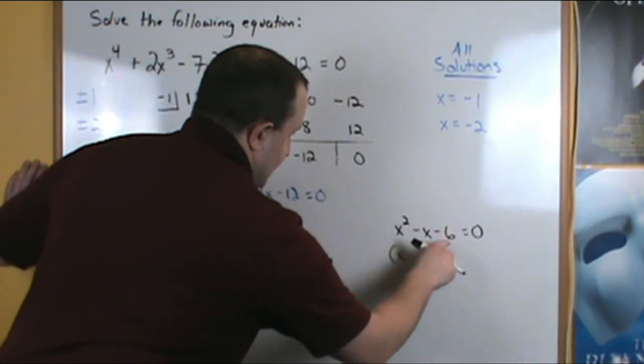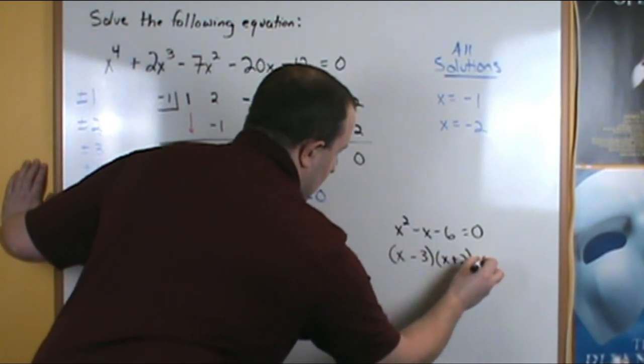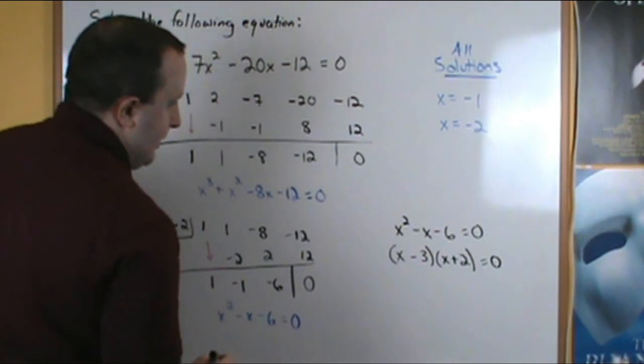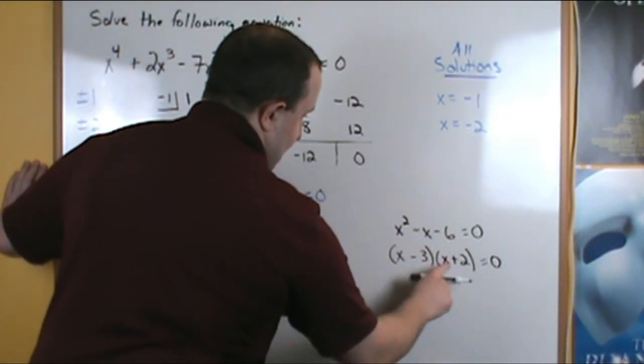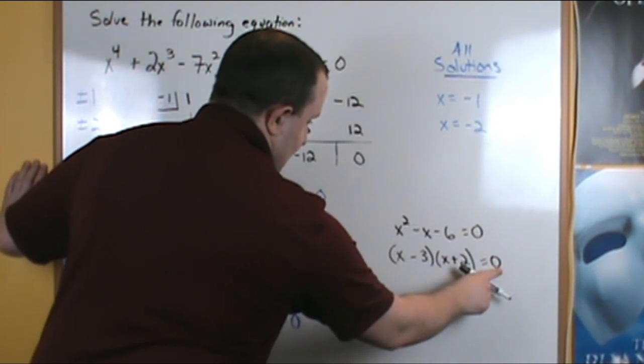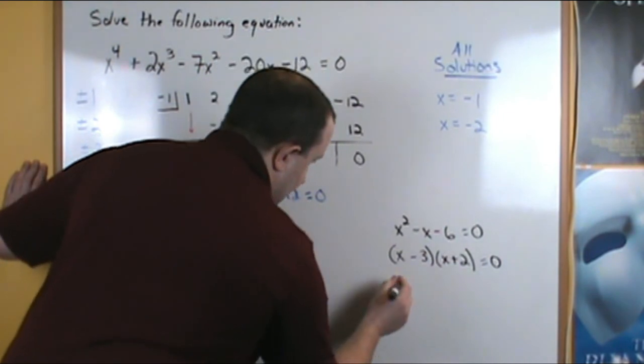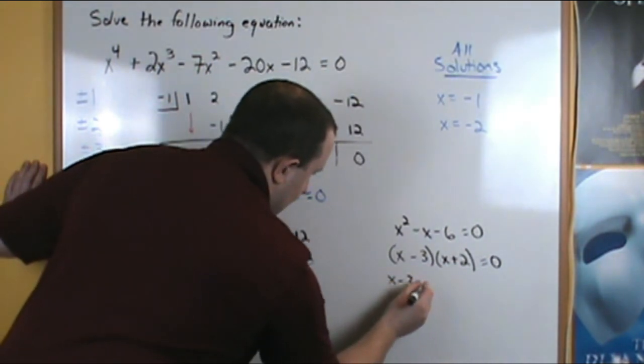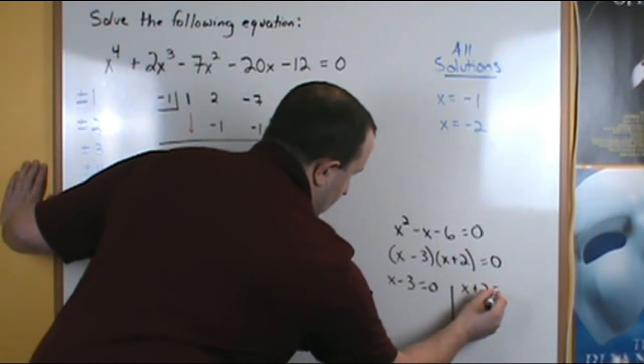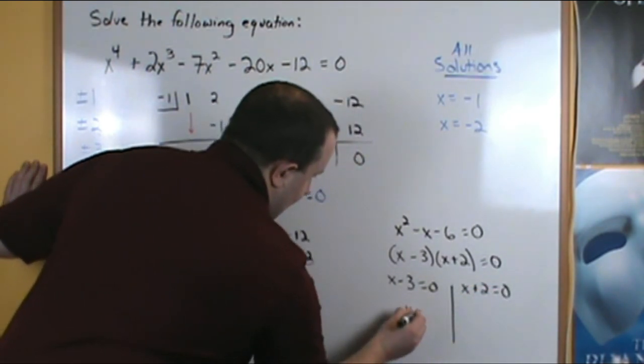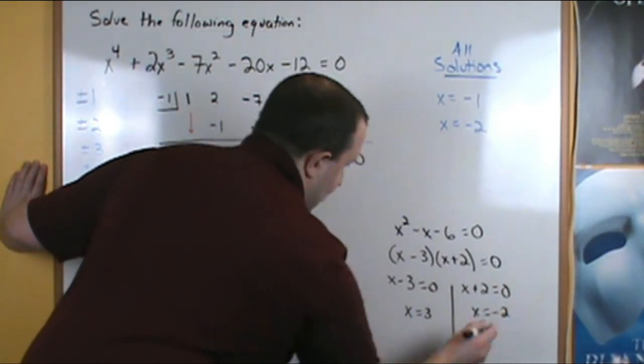x squared minus x minus 6, factor it, is x minus 3 times x plus 2, that equals 0. Now using the zero product property, if we have the product of two binomials that are 0, then either of these two binomials is 0. So x minus 3 equals 0, or x plus 2 equals 0, add 3, we get x to be 3, subtract 2, and we get negative 2.